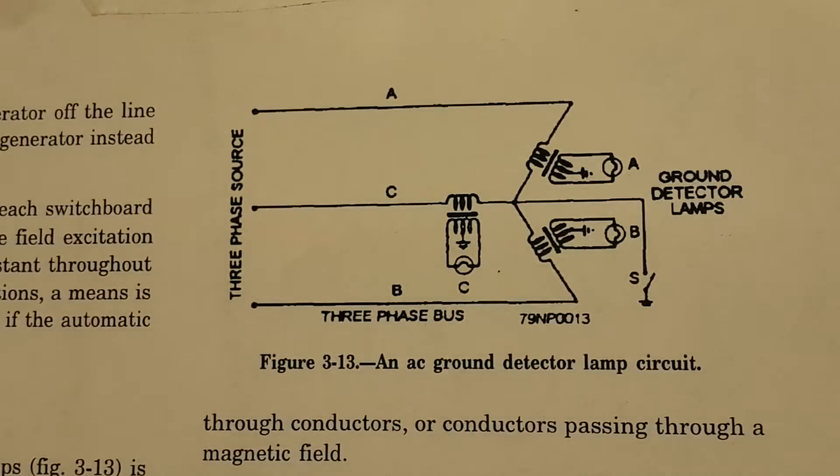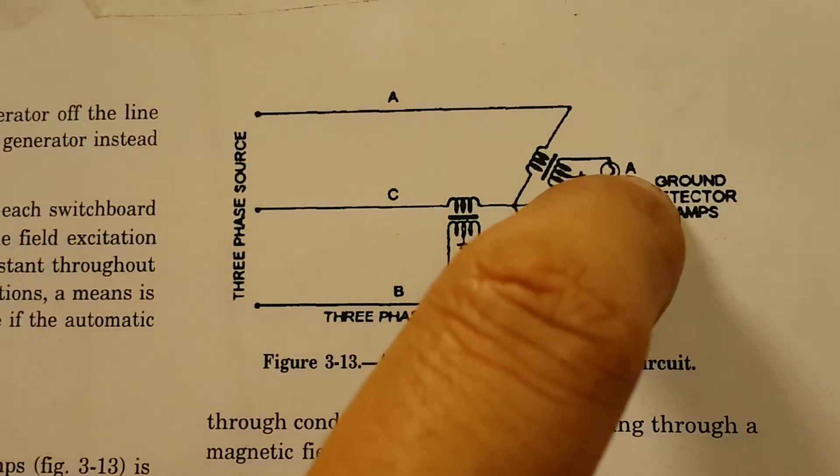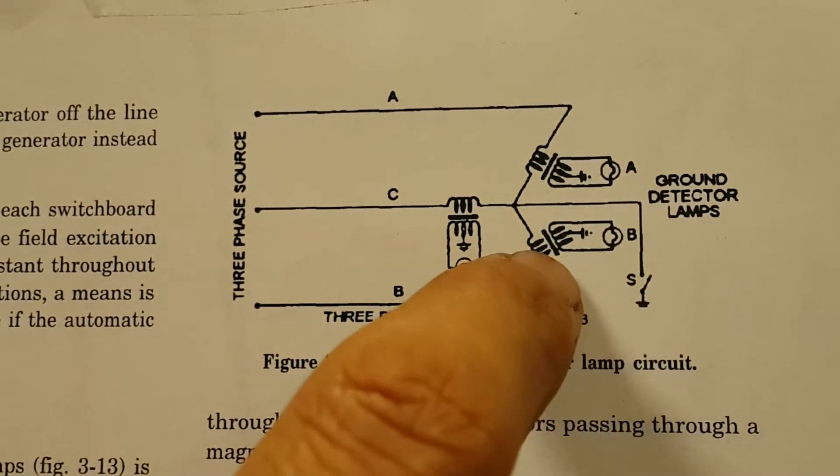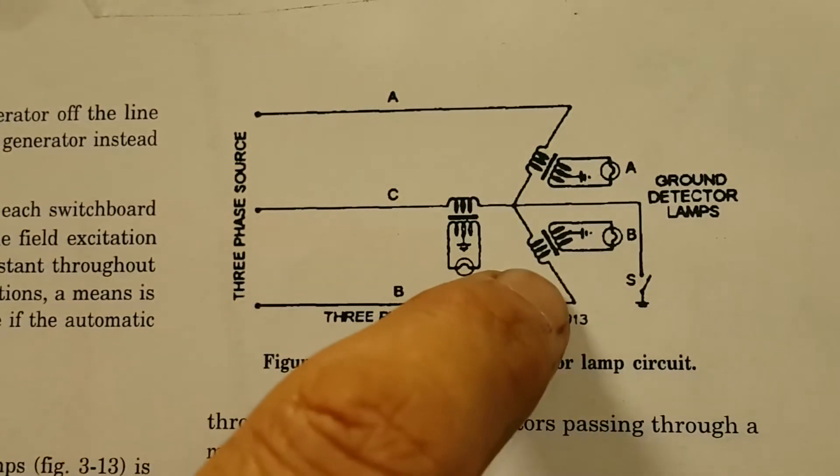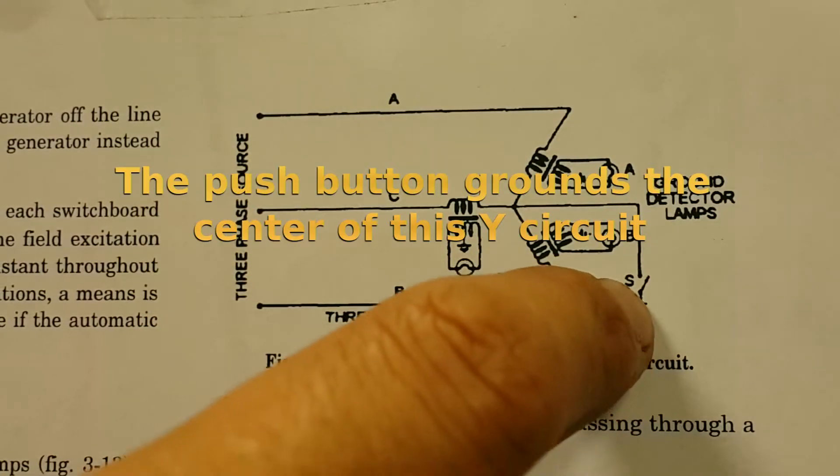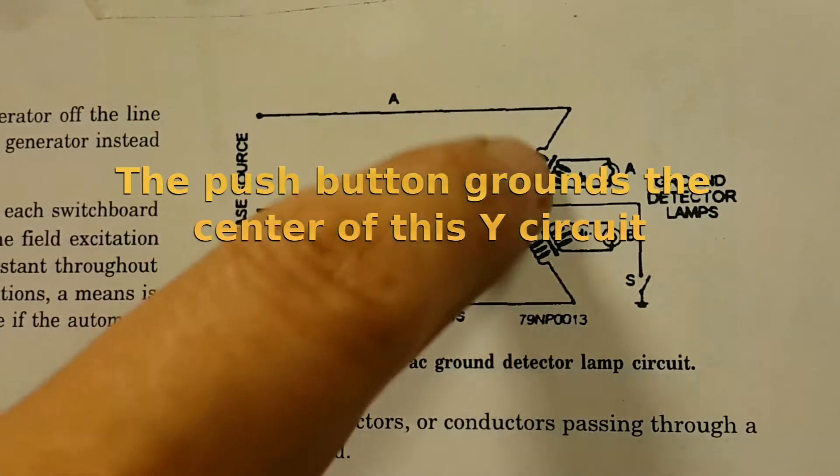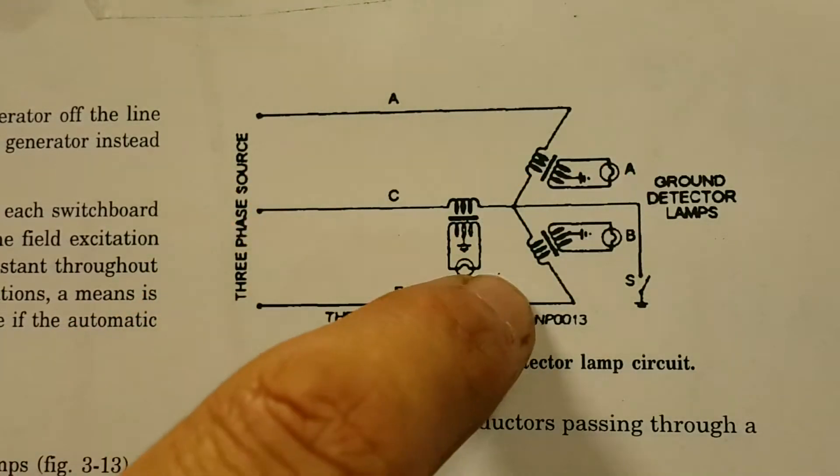Here I got the electrical schematic from the ground detector lamp circuit that I just showed you. Each lamp is attached to the secondary of the isolation transformer that we have there. And then this is the push button over here that is connected to the center. The lights are connected in Y, as you can see.